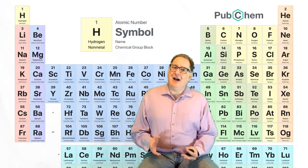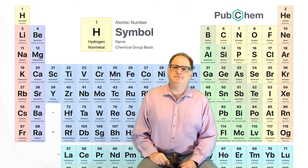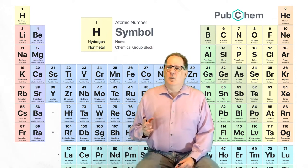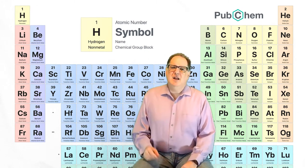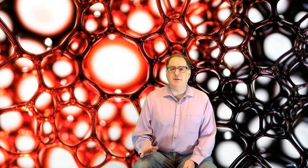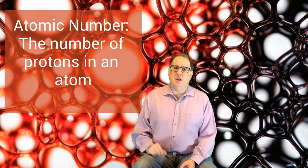Well, each element is a kind of atom. What makes different kinds of atoms? Well, it turns out the important thing is the number of protons. The number of protons is so important that that number is called the atomic number.